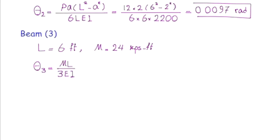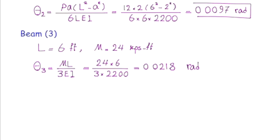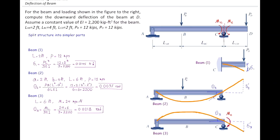M is 24 kip-feet, L is 6 feet. Plugging in the values, the slope of beam number three at C equals 0.0218 radians. Now we can determine the total indirect deflection at the right part.